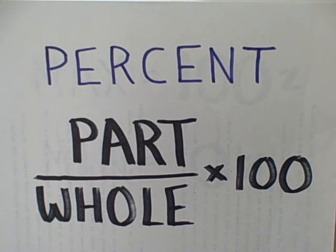Simple percents involve a part-whole ratio. That will give us a decimal number. We then multiply by a hundred to get a percentage.